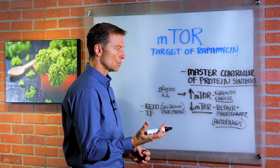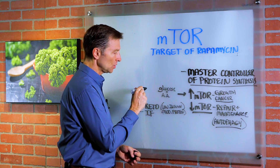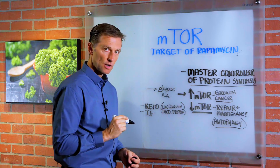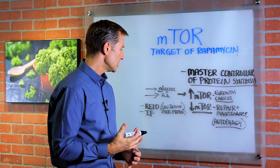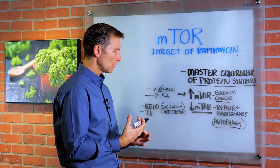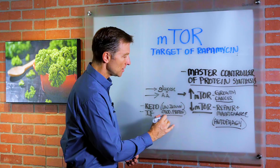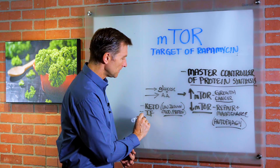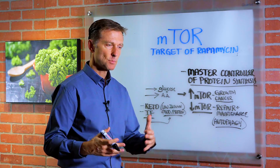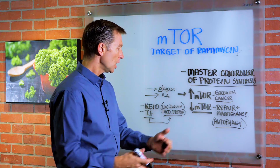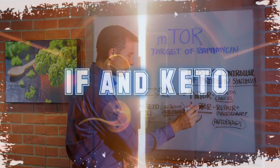Now, the question is, what will make it high? Well, the two things that fuel it are basically glucose and amino acids. Now, if we do a keto diet, we're actually going low insulin and moderate protein. If we add intermittent fasting, we're going to go even lower protein because our body doesn't need as much — it recycles more. We can get into autophagy and actually have lower mTOR.